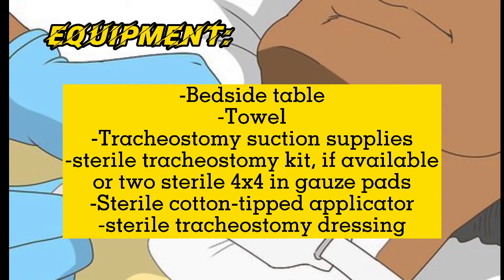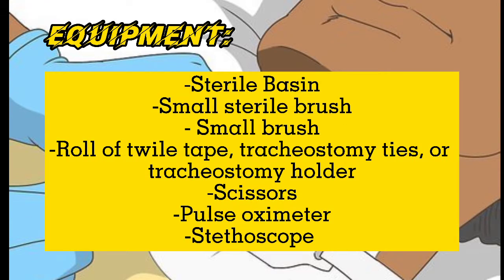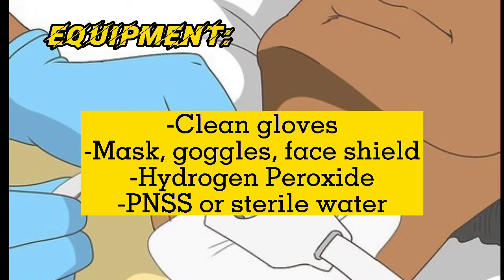The equipment: bedside table, towel, tracheostomy suction supplies, sterile tracheostomy kit if available, or two sterile 4x4 gauze pads, sterile cotton tip applicator, sterile tracheostomy dressing, sterile basin, small sterile brush, roll of dry tape, tracheostomy ties or tracheostomy holder, scissors, pulse oximeter, stethoscope, clean gloves, mask, goggles, face shield, hydrogen peroxide, and PNSS or sterile water.